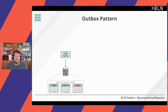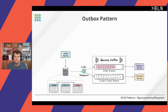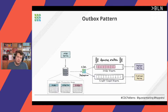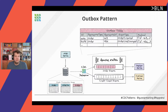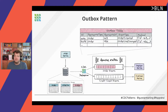The outbox table contains messages meant to be sent to external consumers. We use Debezium to capture changes just from this outbox table — not from the actual business tables — and send those events to consumers. The outbox table is based on domain-driven design ideas, with columns like aggregate type, which describes what kind of aggregate this is: an order, a customer, a recipe, or whatever your domain is about.